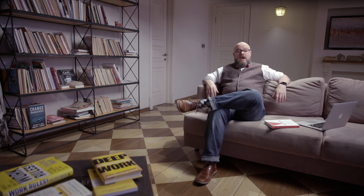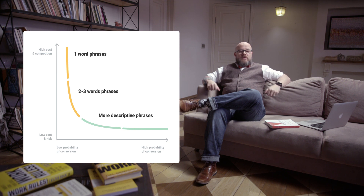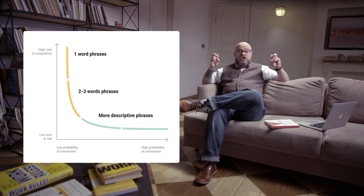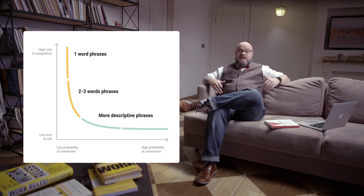The broader a term is, the more traffic it's likely to see. We call these terms fathead terms. They're basic and wide in focus. As you add more keywords to the phrase, you move into the range we call chunky middle. There's not as much search volume, but there's less competition as you get more exact, so it's easier to rank.